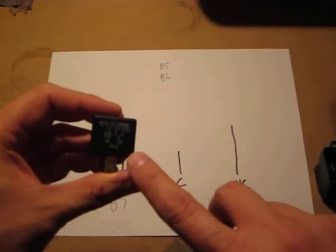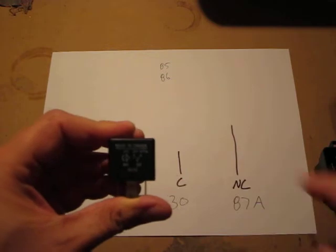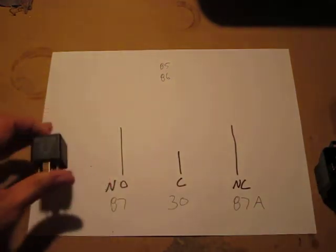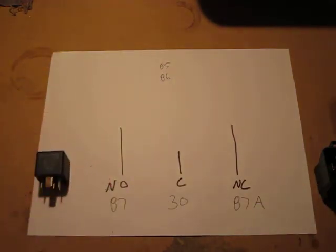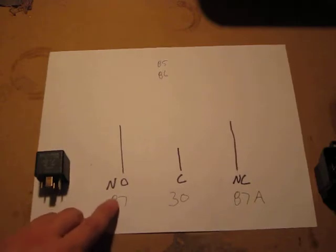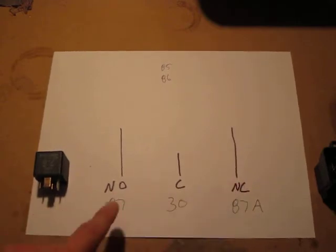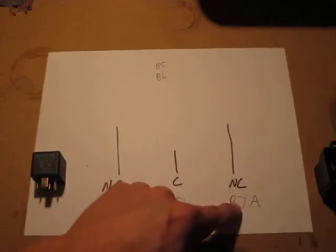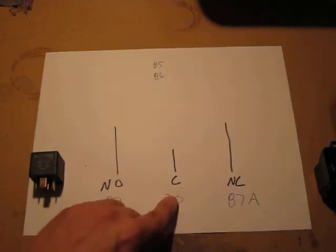So you'll see written on the bottom of the relay there's a 30, an 87A, an 87. And you'll hear people refer to and you'll see in my drawing I call it NO and NC. This stands for normally open and normally closed. C stands for common.